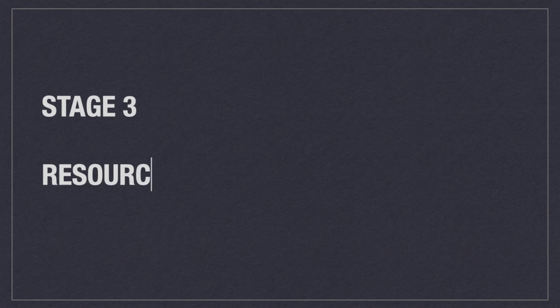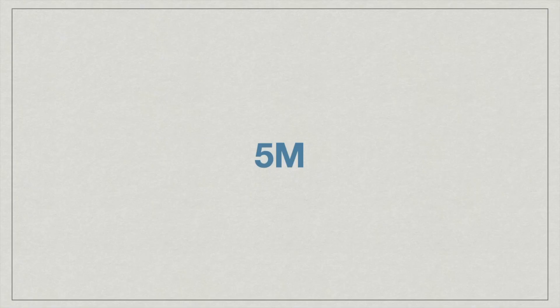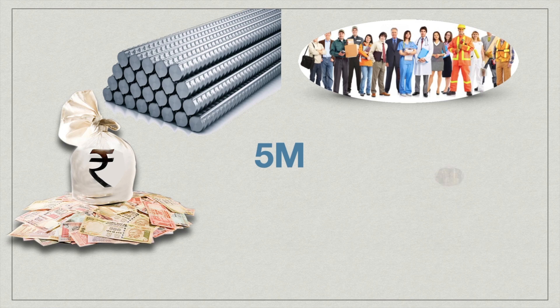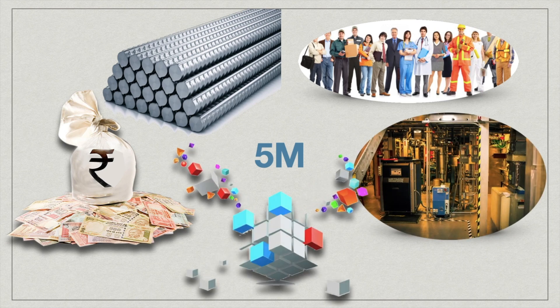Stage 3: Resources — the resources required to run the business. An entrepreneur must have a good idea and knowledge about that, as operation capabilities can be improved a lot with this. The resources are money, material, manpower, machinery, and methods. The quantity and quality of these decide the place or region to set up your enterprise — at least 50% will be decided by this, and the remaining 50% is in Stage 4.